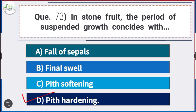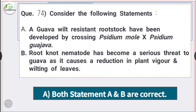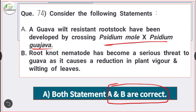Question number 74: Consider the following statements. Statement A: The guava wilt-resistant rootstock has been developed by crossing Psidium molle into Psidium guajava. Statement B: Root knot nematode has become a serious threat to guava as it causes reduction in plant vigor and wilting of leaves. Both statements A and B are correct.